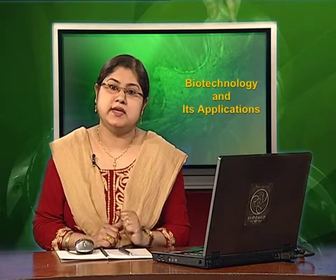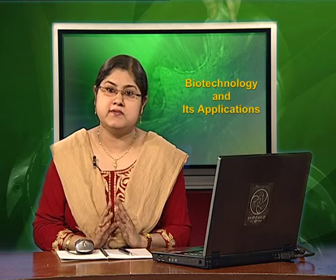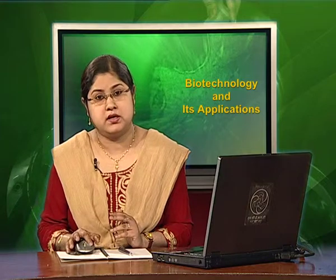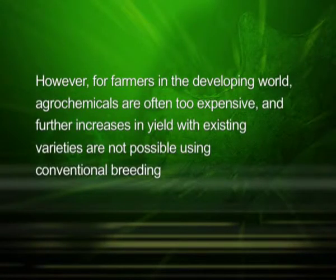In the past century, the green revolution succeeded in tripling the food supply, but still it is not enough to feed the growing human population. These increased yields have partly been due to the use of improved crop varieties, but mainly due to the use of better management practices and agrochemicals like fertilizers and pesticides. However, for farmers in the developing world, agrochemicals are often too expensive and further increase in yield with existing varieties is not possible using conventional breeding.